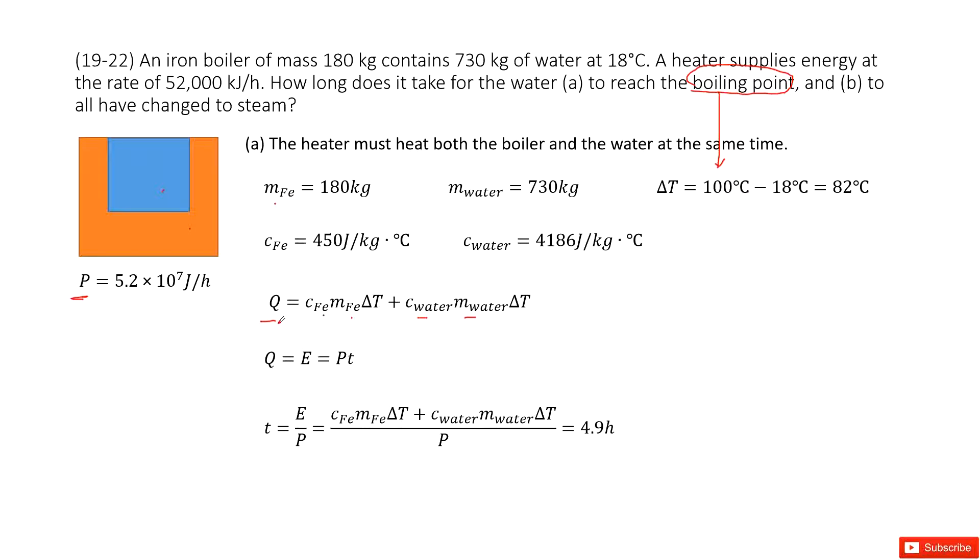Energy is conserved. This heat is totally converted from electric energy: power times time. Therefore, time equals E over P, and E equals Q. We get the function for time, input all known quantities, and get the answer.